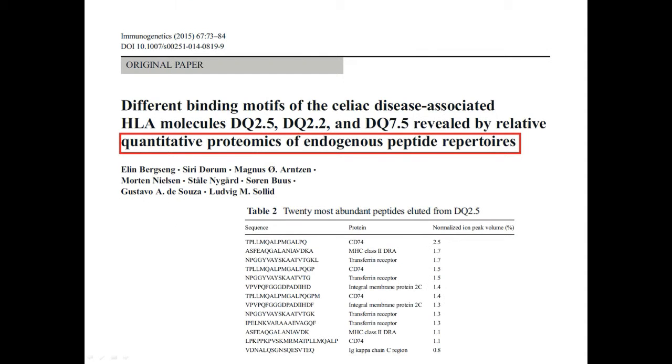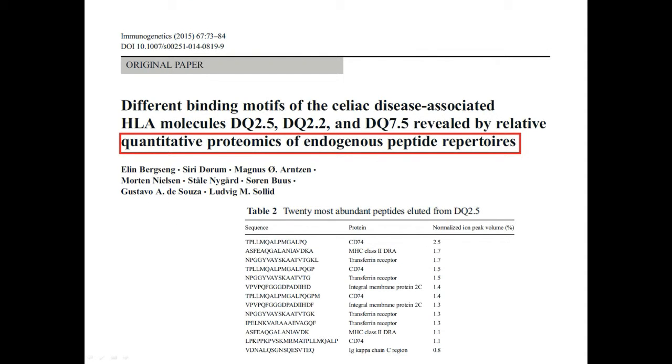This information has proven to be very informative. For example in the publication shown here they reported the normalized area under the curve of peptide features associated with endogenous peptides. This gave the research group proof of the most abundant peptides eluted from their sample.